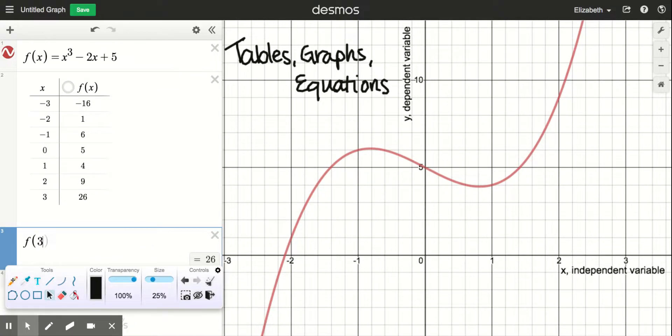We can see that in a table. A table gives you a whole bunch of those values plugged in and the values that come out - the inputs and the outputs - just shown nicely here.